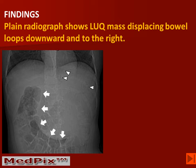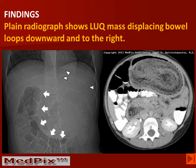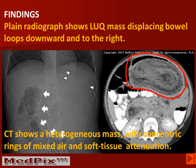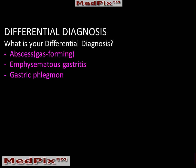The findings in this case are a plain radiograph showing a left upper quadrant mass displacing bowel loops downward and to the right, and a CT scan that shows a heterogeneous mass with concentric rings of mixed air and soft tissue attenuation in the expected location of the patient's stomach. We have several things to consider in the differential diagnosis, including an abscess, a phlegmon, and emphysematous gastritis.